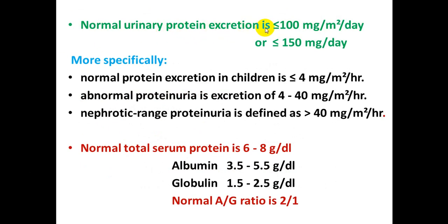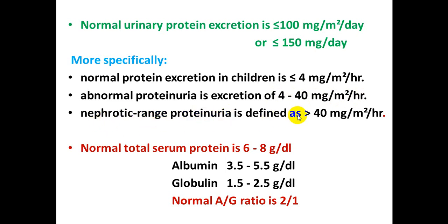Normal urinary protein secretion is 100 mg or less per square meter per day, or generally equal to or less than 150 mg per day. More specifically, normal protein excretion in children is equal to or less than 4 mg per square meter per hour. Abnormal proteinuria is defined as excretion of more than 4 to 40 mg per square meter per hour.